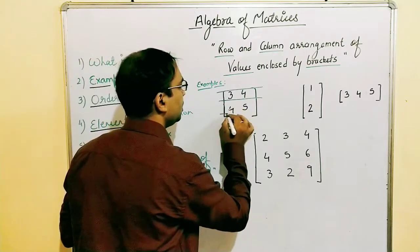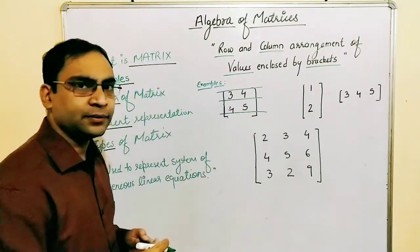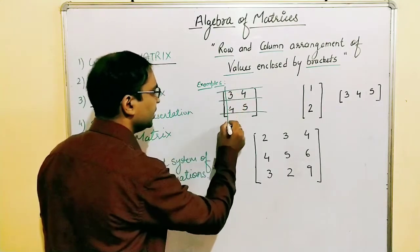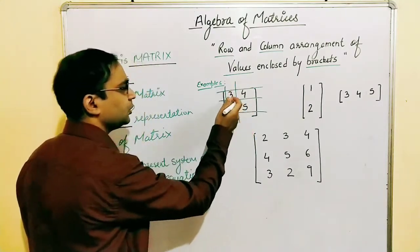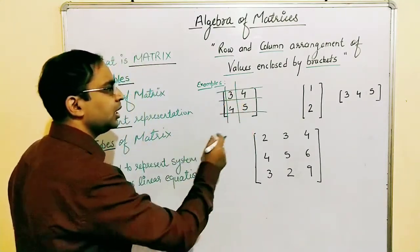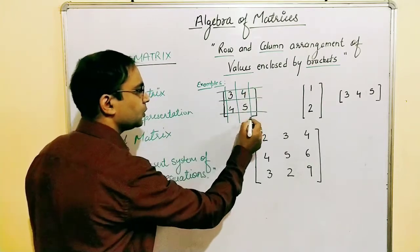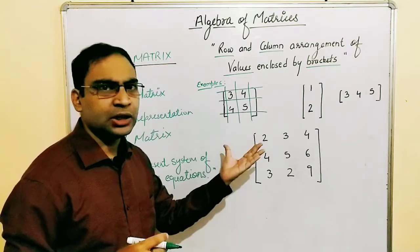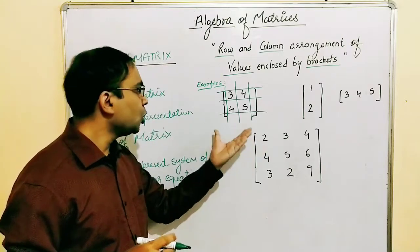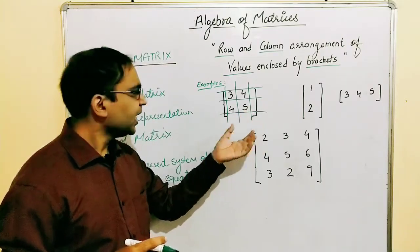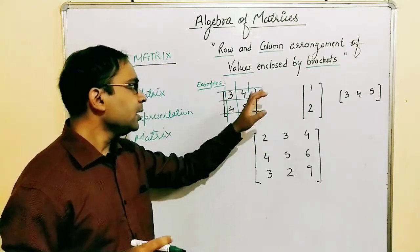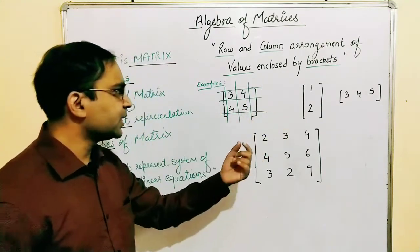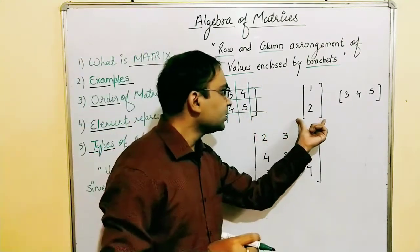So we have two rows, and we also have two columns: column number one with values 3 and 4, and column number two with values 4 and 5. We have arranged these four values in row and column format and enclosed them within brackets, so this becomes a matrix.